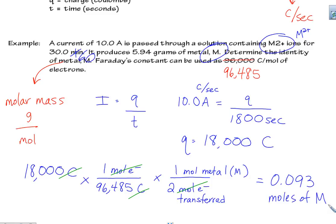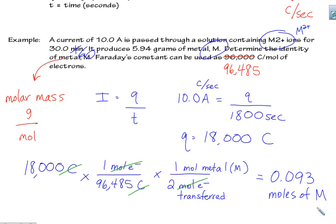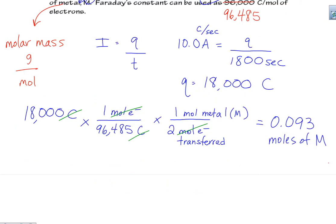Okay, we can use that then to calculate the molar mass. Molar mass is a good way of identifying an unknown. So we'll just kind of do a little plug and chug now with this equation. Molar mass. They told us how many grams of metal were formed: 5.94 grams. And now we know that's for 0.093 moles of metal.